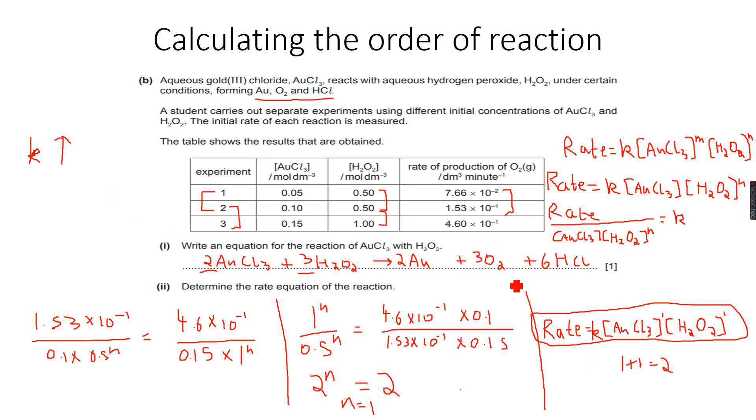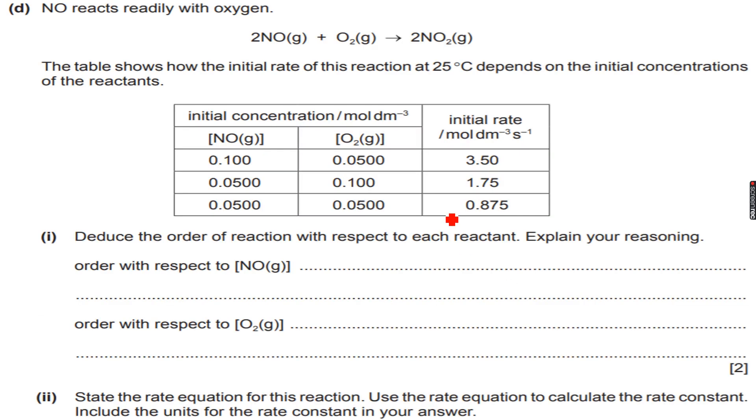So now we have done this as well. Let's move forward. Let's do an exercise - only one question on order of reaction. So nitrogen monoxide, NO, reacts readily with oxygen: 2NO gas plus O2 gas gives 2NO2 gas. And the table shows how the initial rate of this reaction at 25 degrees Celsius depends on the initial concentrations of the reactants.